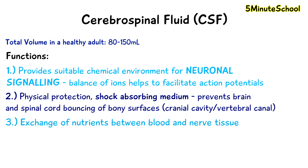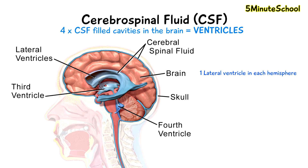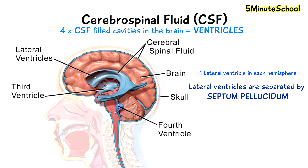There are four cerebrospinal fluid filled cavities in the brain called ventricles. There is a lateral ventricle in each hemisphere and these lateral ventricles are separated by a thin membrane called the septum pellucidum. Then we have the third ventricle just above the hypothalamus and the fourth ventricle between the brainstem and the cerebellum.